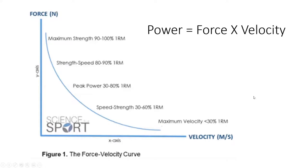When we look at power, we know it is a product of force and velocity — it falls into a mix of speed and strength. Force and velocity don't happen in a vacuum; we have to consider how fast we are moving when we are producing that force. So we look at the force-velocity curve.